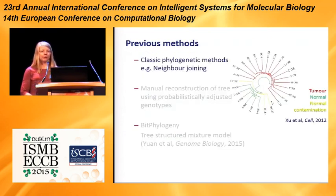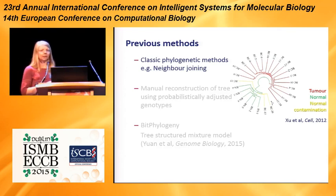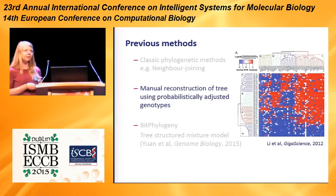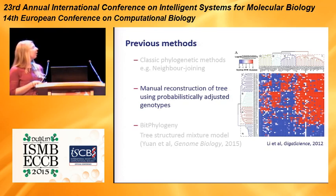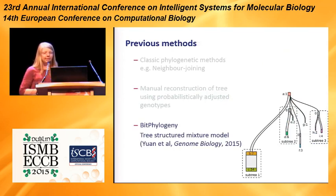We're not the first to tackle these problems. There's been a study by Schuh et al. that used classic phylogenetic methods such as neighbor joining; however, those classic methods don't necessarily account for errors in the data set. A different approach was developed by Liadal, where they probabilistically adjusted the genotypes based on the false discovery rate and the allele dropout rate, then manually reconstructed a tree from the matrix of probabilities. There's also bit phylogeny from my own group, which uses a tree-structured mixture model — but mixture models generally need a large sample size to converge, whereas current single cell datasets are rather small, with usually fewer than a hundred cells.